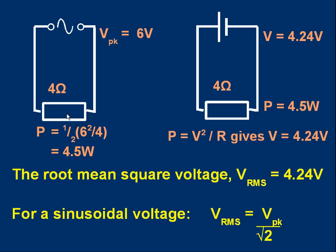So a steady voltage of 4.24 volts would have the same power as this alternating voltage with a peak of 6 volts. We call this 4.24 volts the root mean square voltage, V_rms.